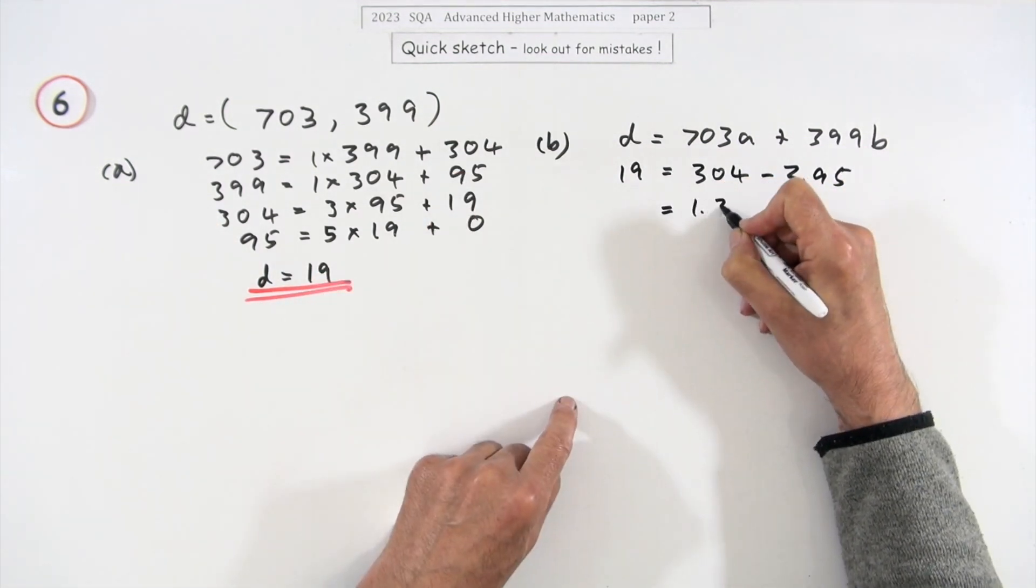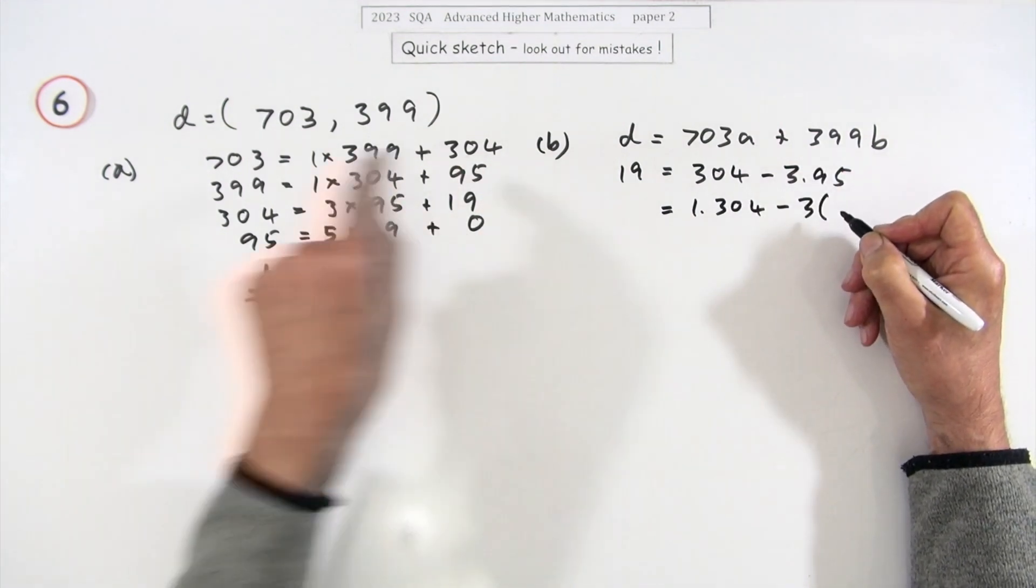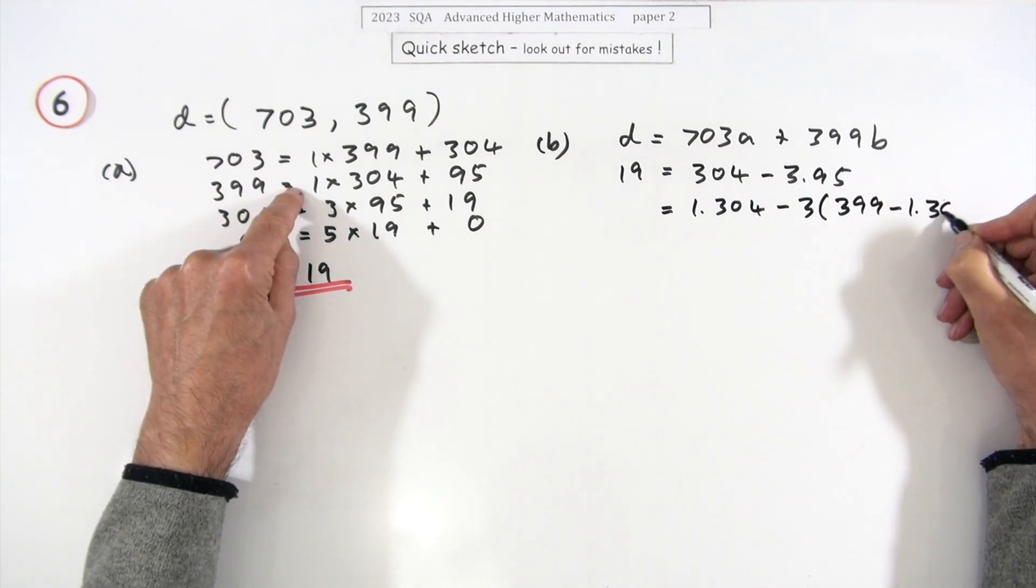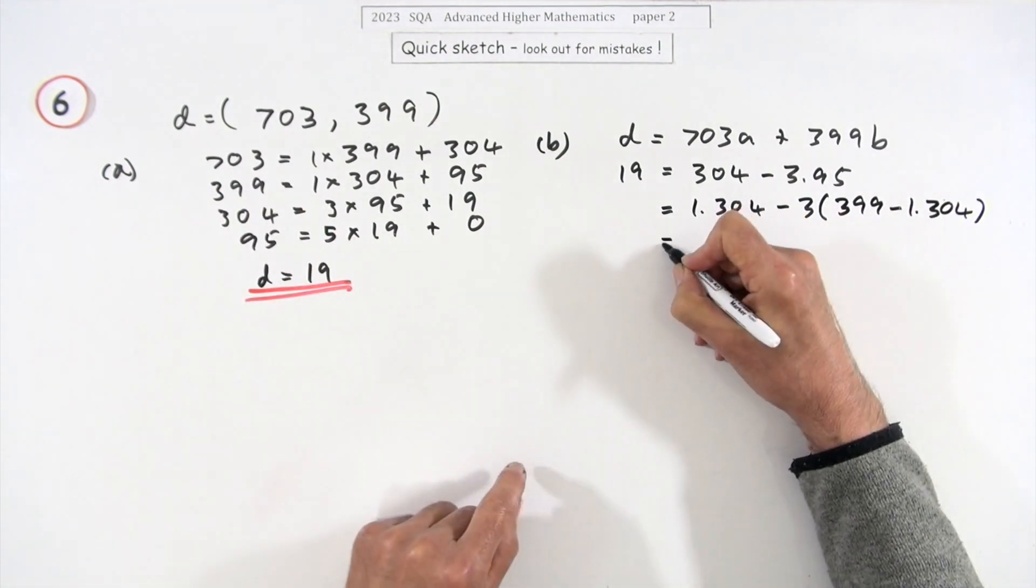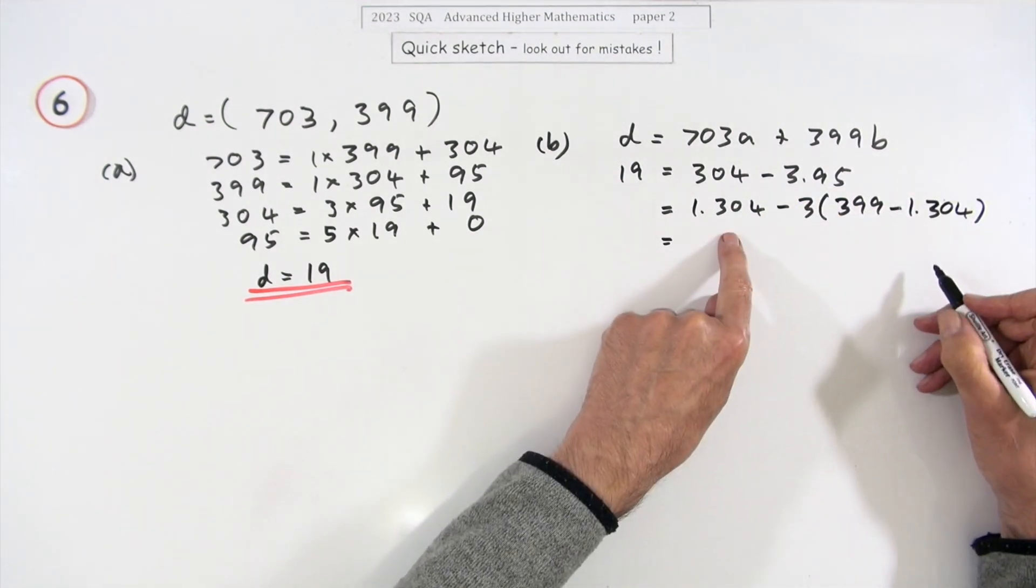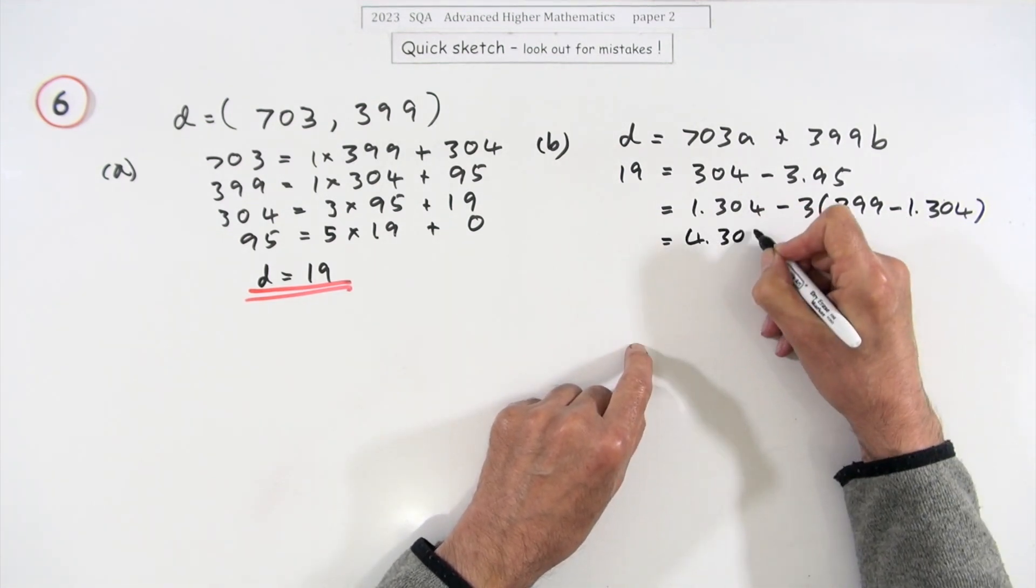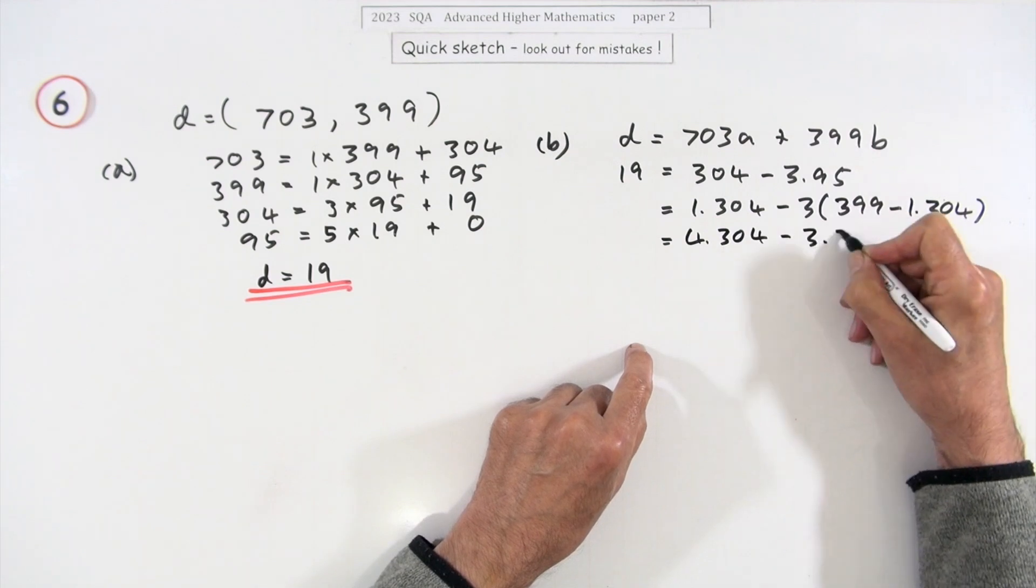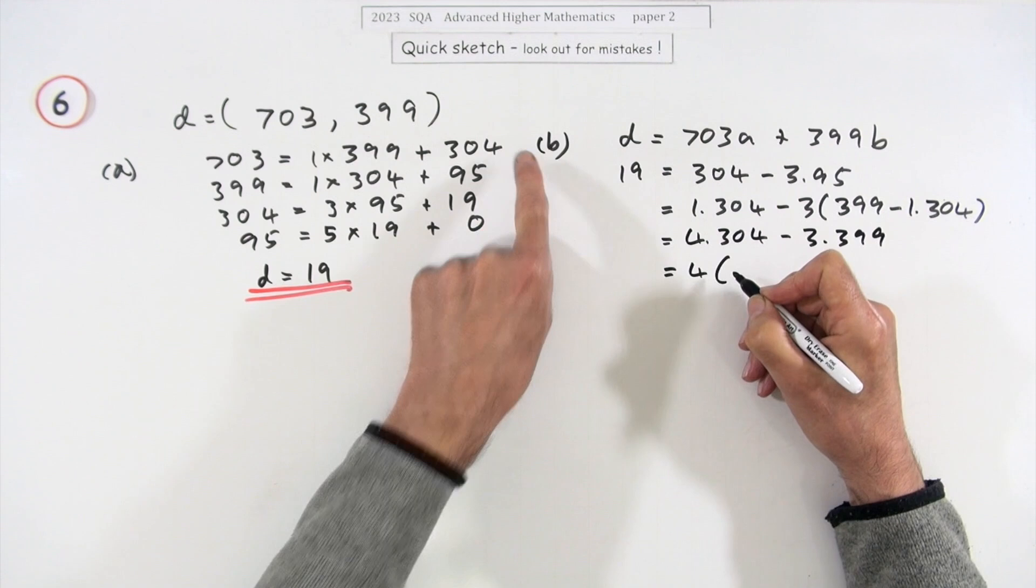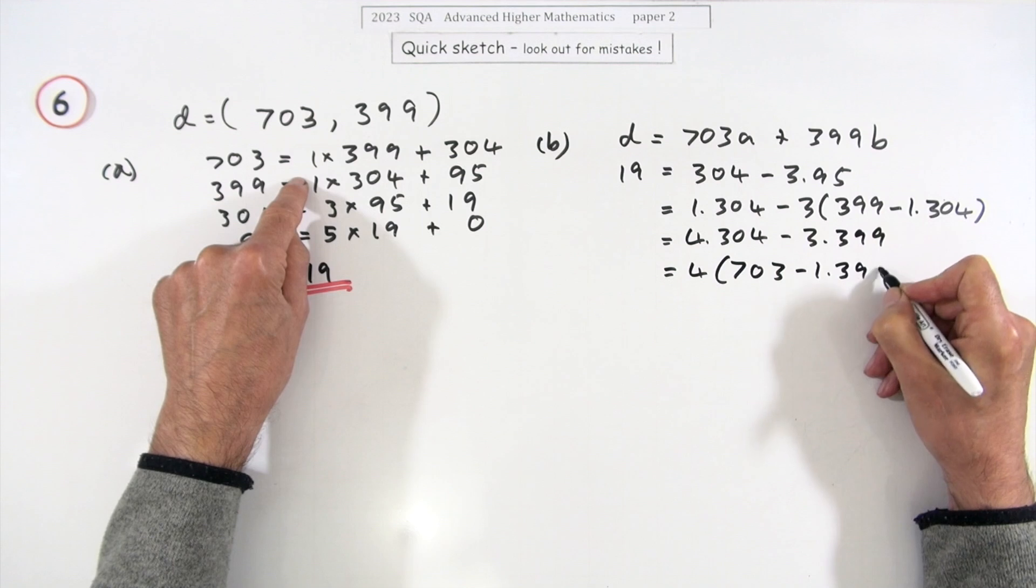Right, now the 95, I think we'll just identify that as a single lot of that minus three lots of, now the 95, that's 399, that's 399 minus one lot of 304, just using the dot instead of a cross because it looks even messier. Tidy that up because I've got some 304s here, that's plus another three, so there's four lots of 304 minus three lots of 399. Now I can go to the 304, that's, I'll be finished, 703 minus one lot of 399.